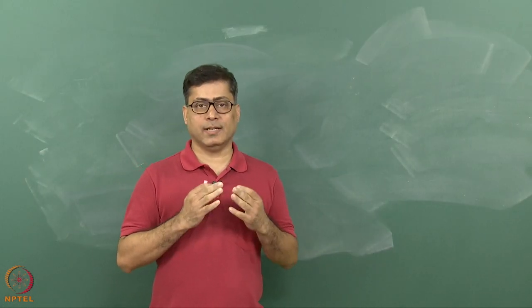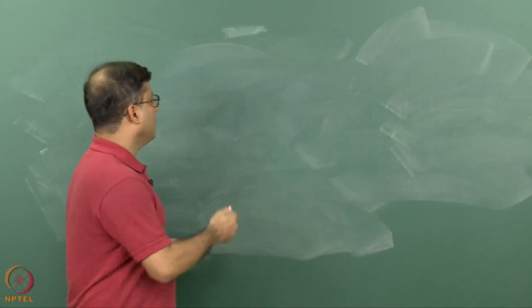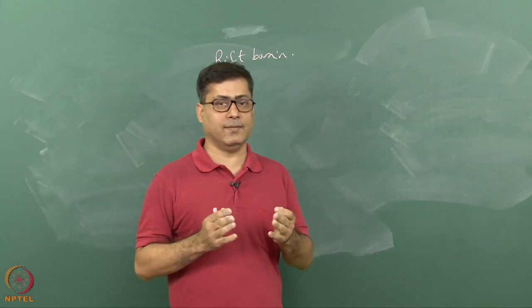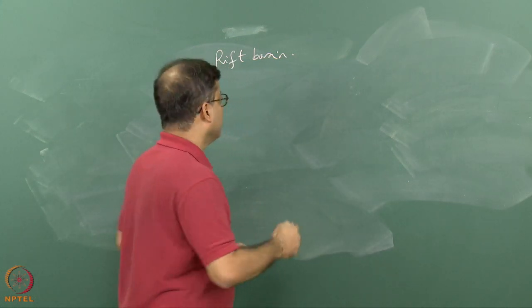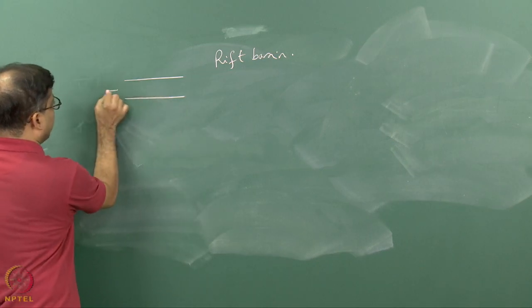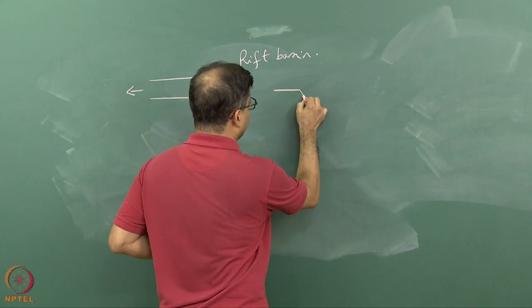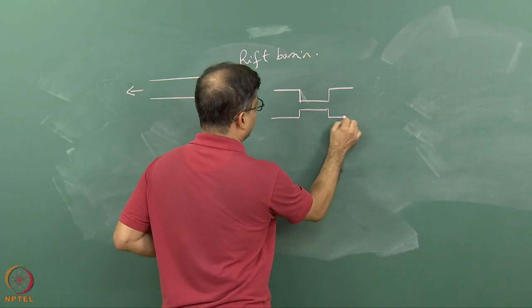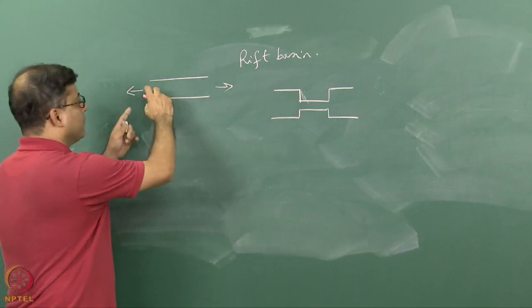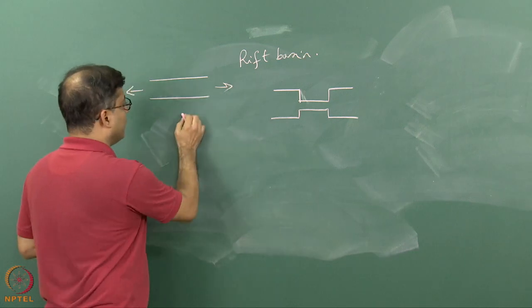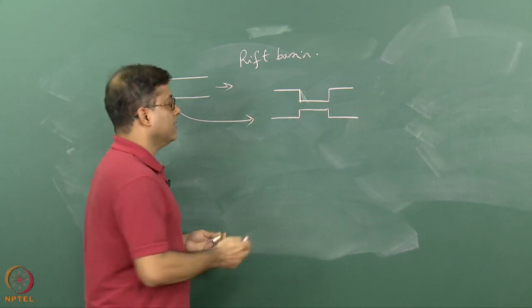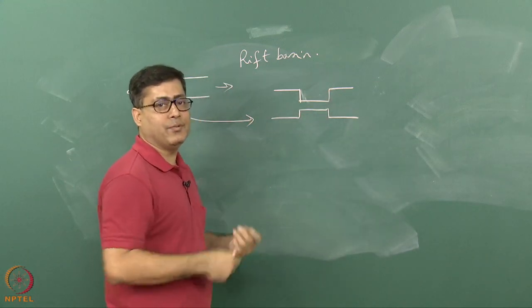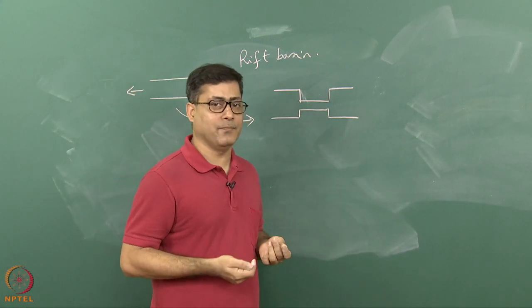Now we will see how the isostatic concept and the stress concept can be applied for a rift basin. A depression can be produced on the earth's surface because of extension and thinning of the lithospheric layer. Imagine the lithospheric layer undergoes horizontal tectonic extension and attains such a geometry. In reality a rifted basin might look different in cross section. A depression is created and sediment may get deposited. The question is: how do we apply the isostatic equation involving stress when the rift basin is neither sinking nor moving upward?